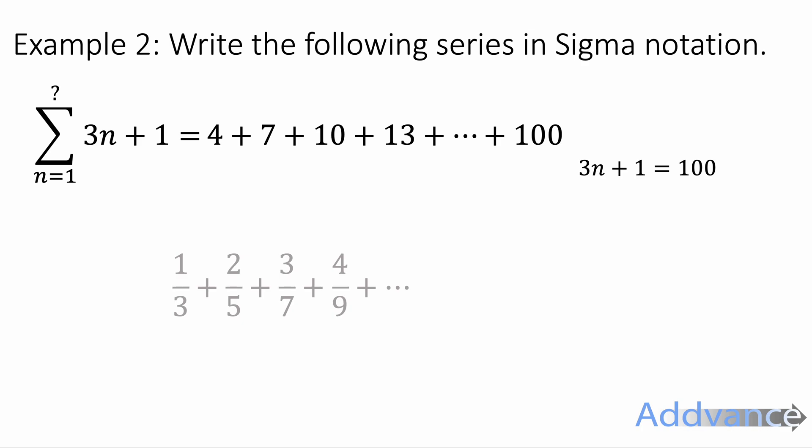but we know the term is 100. So let's make 3n plus 1 equal to 100. We subtract 1 off both sides and we divide by 3. And we get n equals 33. So the final n is 33 on the top of the sigma notation. And that is the final answer.